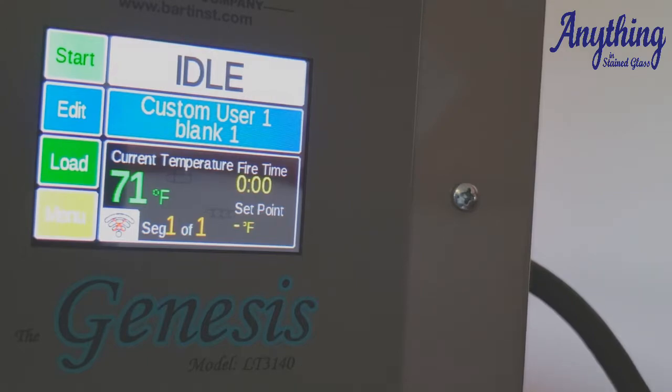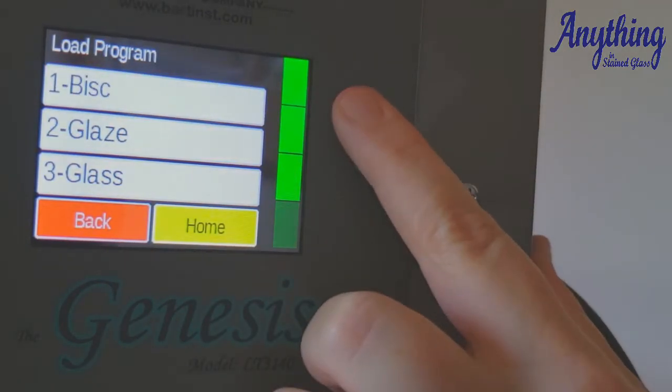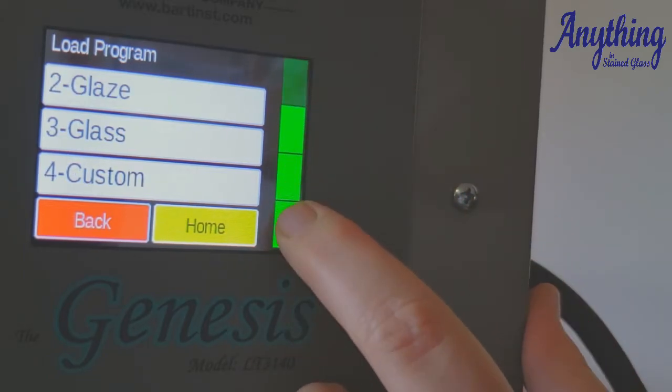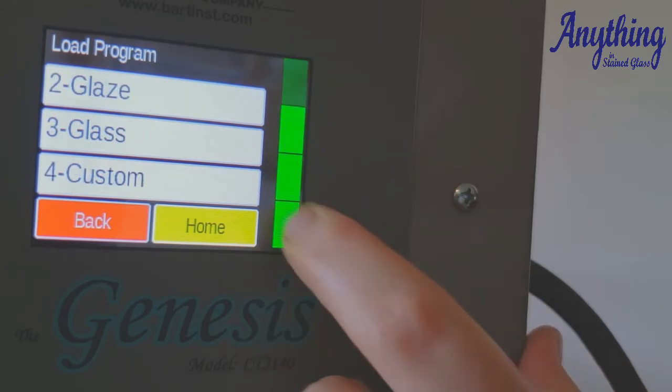So to program your control board to fire, you simply start with pressing the load button. Over here on the right hand side, you have your scroll bar. This allows you, on every screen, if there's a list, to move up and down through your list.